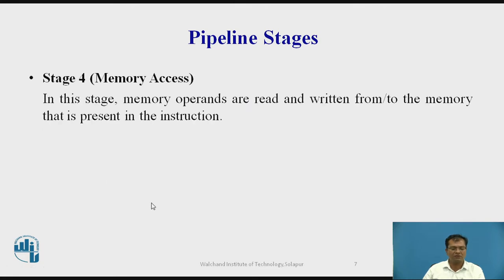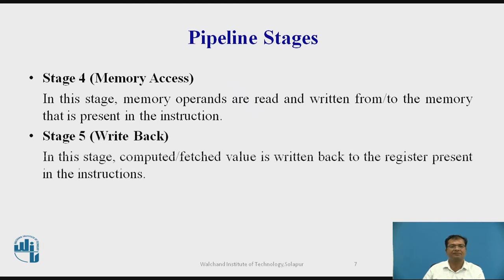The fourth stage is called memory access. In this stage, the memory operands are read or written from or to memory as present in the instruction. Stage 5 is called write back, in which the computed or fetched values are written back to the register present in the instruction. These are the five main stages of a pipeline.